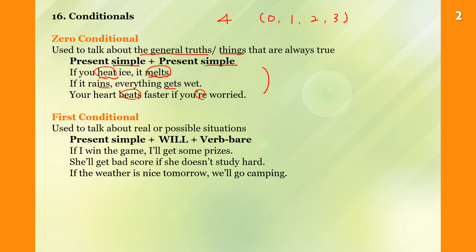First conditional is to talk about real or possible situations. Present simple plus will. If I win the game, I am not sure, but in case I win the game, I will get some prizes. It is possible. She will get bad score if she doesn't study hard. Maybe, but in case she doesn't study hard, she will get bad score.